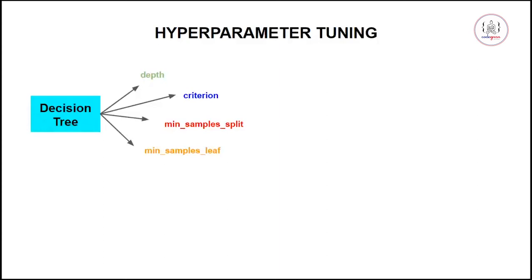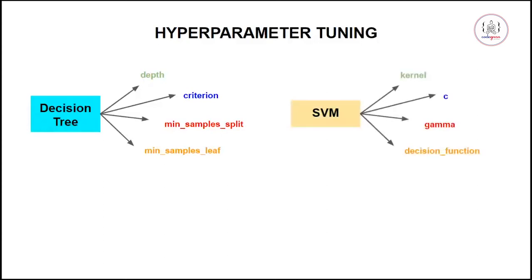You also have minimum samples leaf — the minimum number of samples in your leaf node. You can have different values for all of these. Similarly for SVM, there are different kernels and different values for the C parameter, gamma, and decision function. So how do we decide the optimal parameters for SVM and decision tree? One way is to try different values with a for loop, but writing a for loop takes time and is not the right approach.